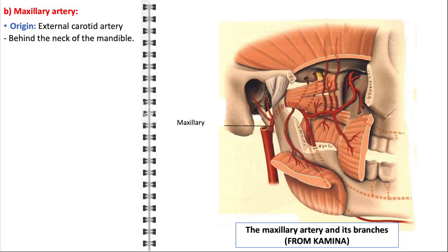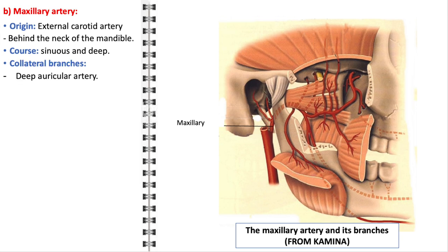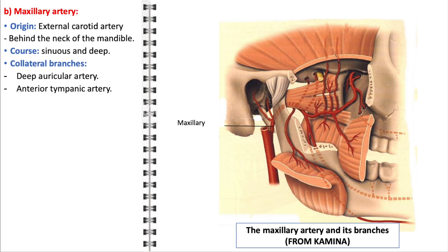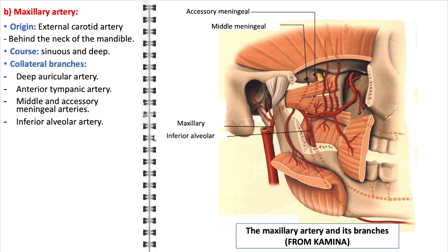The maxillary artery, a major branch of the external carotid artery, originates behind the neck of the mandible. It follows a sinuous and deep course, making it less accessible but critically important in supplying various deep structures of the face. The artery has a complex array of collateral branches, each serving specific regions: the deep auricular artery supplies the external acoustic meatus and tympanic membrane; the anterior tympanic artery nourishes part of the tympanic cavity; the middle and accessory meningeal arteries supply the meninges and dura mater of the brain and skull; and the inferior alveolar artery, vital for the lower teeth, runs through the mandibular canal.